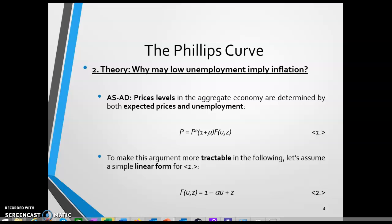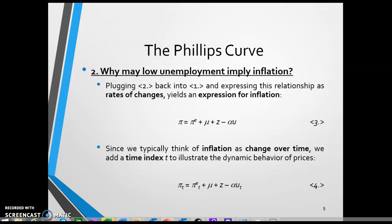There is some algebra here, which I'm going to largely skip, but to make this argument tractable we assume the relationship between real wages and unemployment is linear — specifically equal to 1 minus alpha times u plus z. With substitution and expressing everything as a rate of change, the aggregate supply curve gives us the intuition that inflation equals expected inflation plus mu (markup) plus z (our catch-all variable) minus alpha times u.